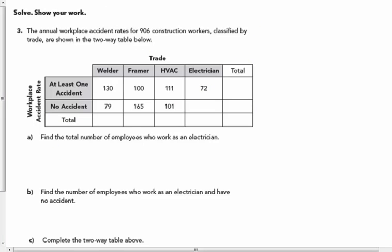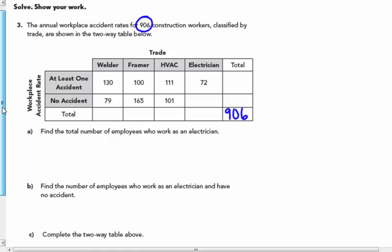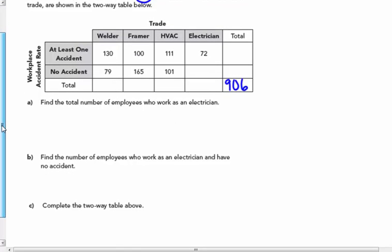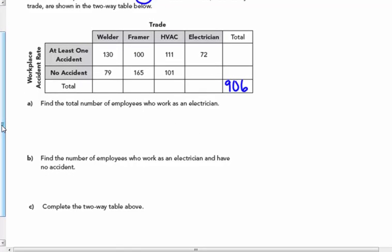The third example here, the annual workplace accident rates for 906 construction workers classified by trade are shown in the two-way table below. I'm going to leave this for you to complete this two-way table on your own. And we will go over this in class tomorrow. Thank you.